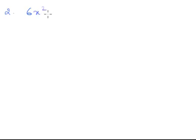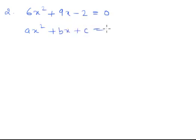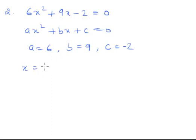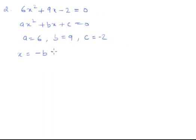Suppose you have the equation 6x squared plus 9x minus 2 equals 0. Comparing it with ax squared plus bx plus c equals 0, the value of a is 6, the value of b is 9, and the value of c is minus 2.